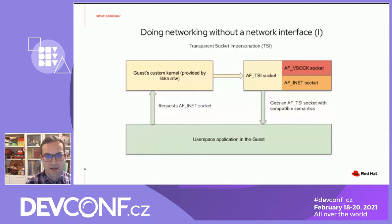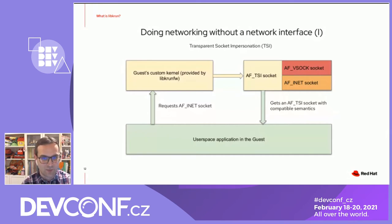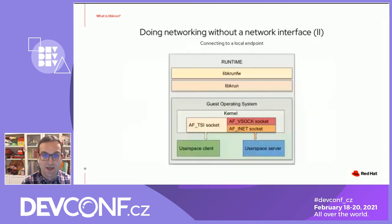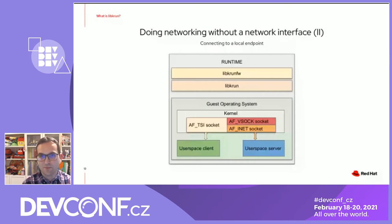When the user space client attempts to establish a connection to a local endpoint — to some service running within the context of the guest operating system itself — the user space client requests the connection through the TSI socket, not being aware that it's a TSI socket (it thinks it's an AF_INET socket). The TSI socket will attempt to fulfill the request using the INET personality first. As there is a user space server in the local context, the request is fulfilled and the connection is established. The user space client and server can start communicating in the usual way — very similar to what would happen if the user space client was using a conventional AF_INET socket.